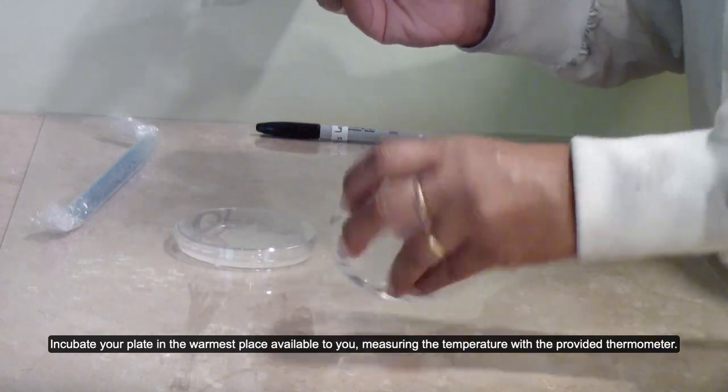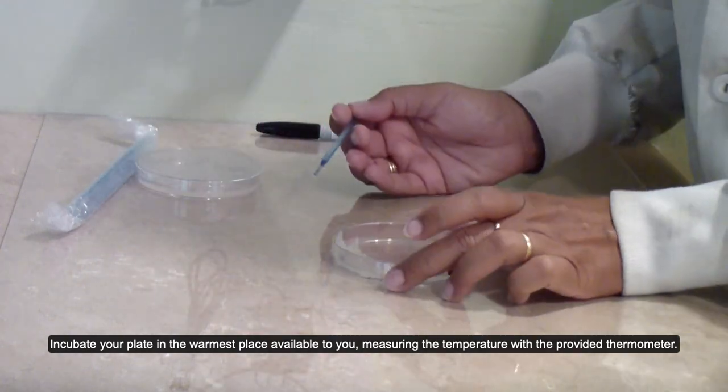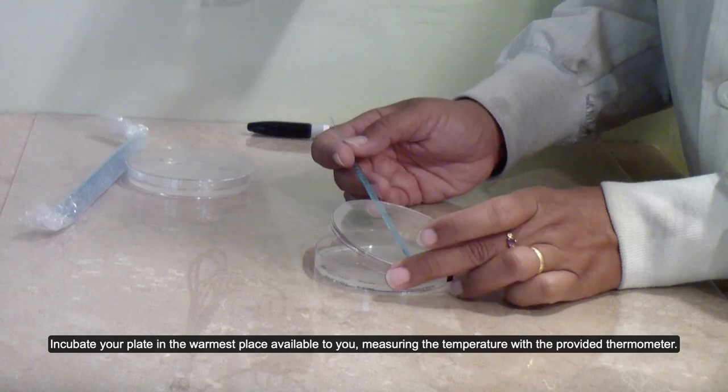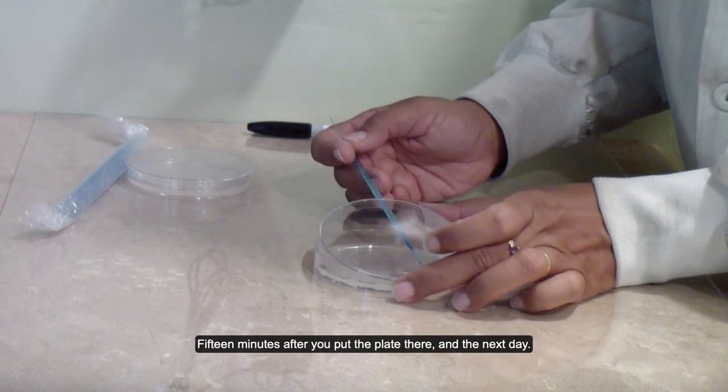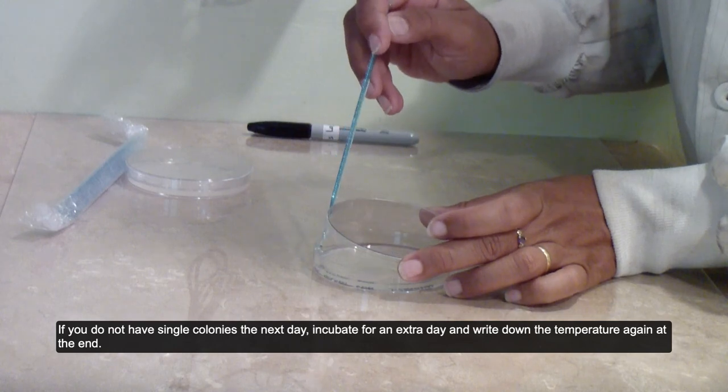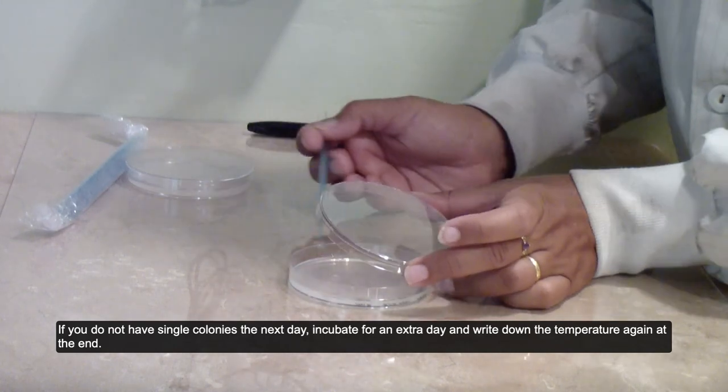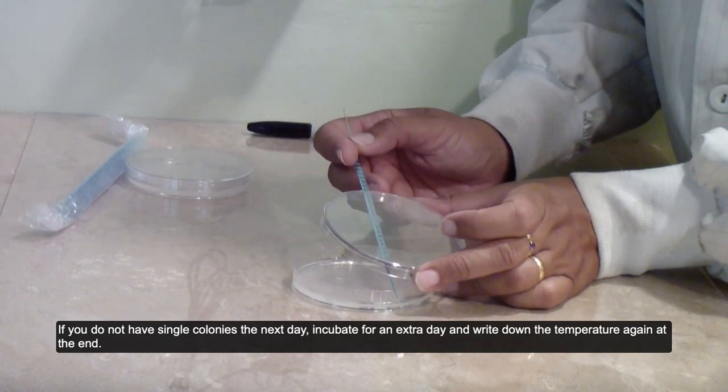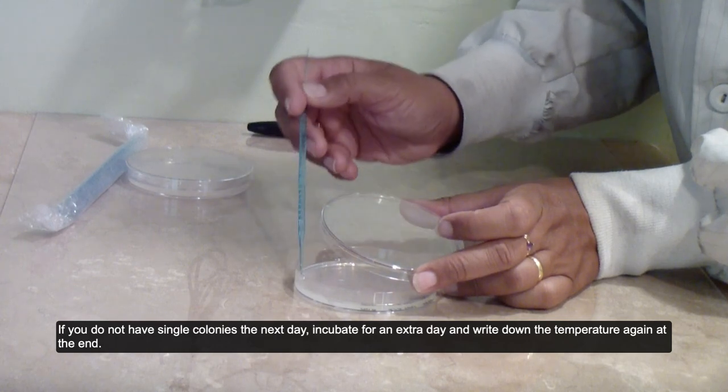Incubate your plate in the warmest place available to you, measuring the temperature with the provided thermometer 15 minutes after you put the plate there and the next day. If you do not have single colonies the next day, incubate for an extra day and write down the temperature again at the end.